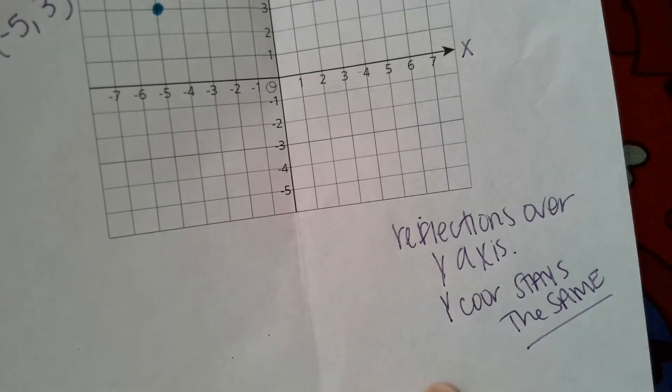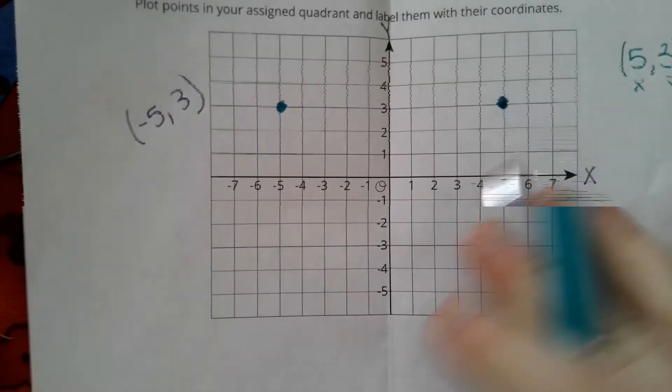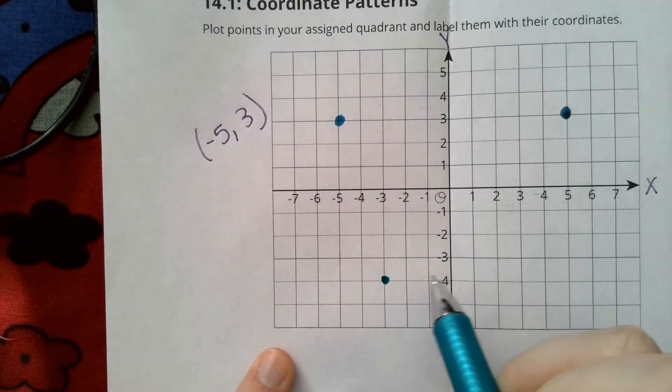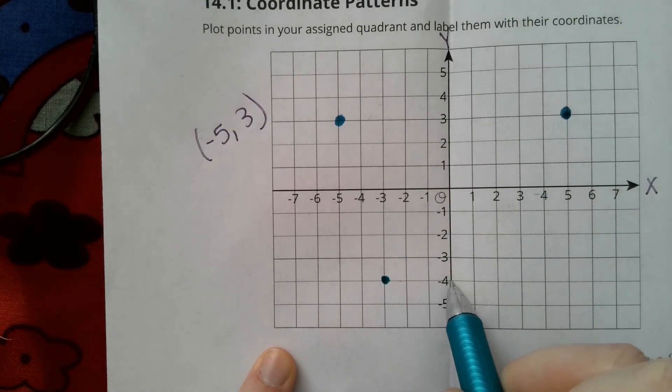Okay, this is true for negative values too. If I have, let's say I go to negative 3, negative 4. When I reflect this over the y-axis, notice this is 1, 2, 3, 3 units away from the y-axis.